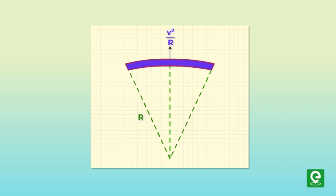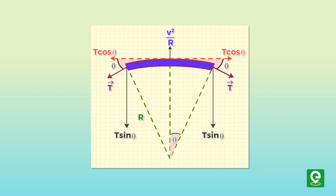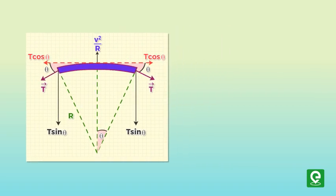The horizontal components of tension cancel out, and each vertical component T sine theta acts radially towards the arc center. Hence, the total radial force on the element is 2T sine theta.